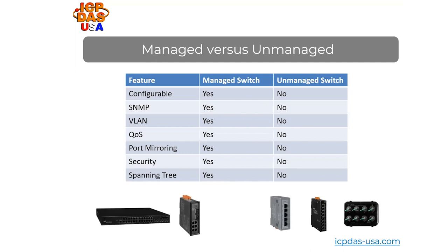Our MSM6226G supports voice VLAN, which ensures priority of the transmission of voice traffic and voice quality over the network. Port mirroring is usually used for monitoring and intrusion protection. It allows monitoring network performance by sending a copy of network packets on one switch port to a network monitoring connection on another switch port. Spanning tree protocol helps prevent loops in local area networks with redundant paths, allowing the existence of only one active path between two endpoints.